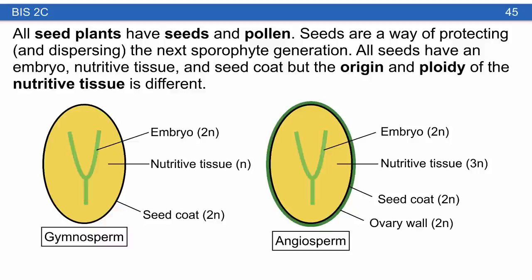All seed plants have seeds and pollen — seeds protect and disperse the next sporophyte generation. They all have an embryo, which is the diploid next sporophyte generation, some kind of nutritive tissue, and a seed coat. The nutritive tissue in gymnosperms is haploid, whereas in angiosperms it is triploid and the product of double fertilization. Also, gymnosperms don't produce fruit — that's reflected by the absence of an ovary wall.